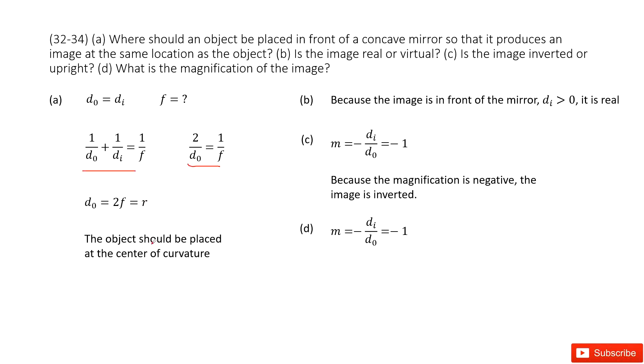The second one asks: is the image real or virtual? As we can see, because the image is in front of the mirror, di is larger than zero, so it's real.